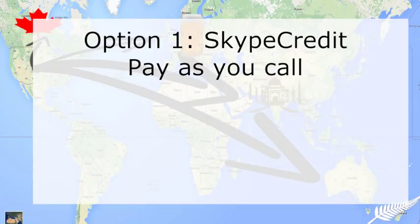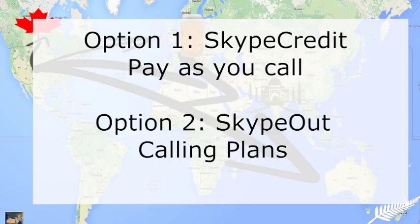You can either pay as you go by using something called Skype credit. Basically you charge up your Skype account and then using the credit that you've added to your account you can call these friends and family. Or you can get a calling plan through Skype. Right now I have a Skype Out plan for the US and Canada. This lets me make free phone calls to any phone number in the US or Canada. Now if I were doing more traveling and needing to call phones for people in other countries I might get a Skype global plan, but they have several plans so you'll want to review them and find out which option is best for you.